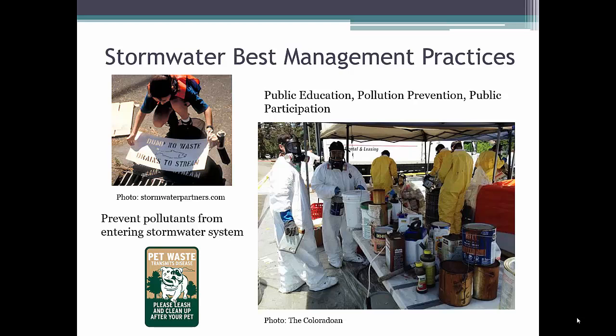The pictures here show some of the most common BMPs used to meet permit requirements of public education, pollution prevention, and public participation. The picture on the upper left shows a young volunteer stenciling 'dump no waste' signs near a stormwater inlet, and the photo on the right shows a household hazardous waste collection event being held in a city. The pet waste stations you find in parks and along trails are also provided to meet MS-4 requirements. These BMPs are intended to prevent pollutants from entering the stormwater system in the first place.